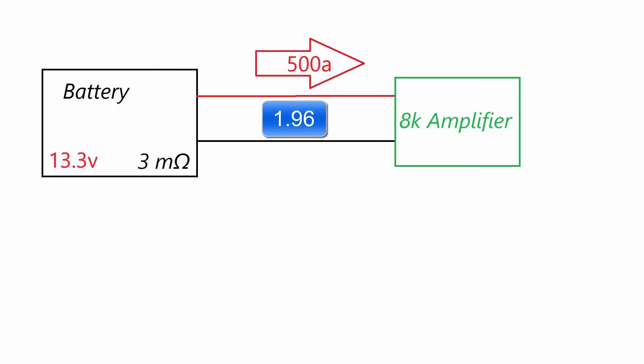So let's assume you're using an 8000 watt amplifier and it has a burst current requirement of 500 amps. We add the three milliohms, the 1.96 milliohms for a total of 4.96 milliohms, and we multiply that by 500, which represents the current in amps. And the total, as you can see here, is 2.48 volts lost in this situation.